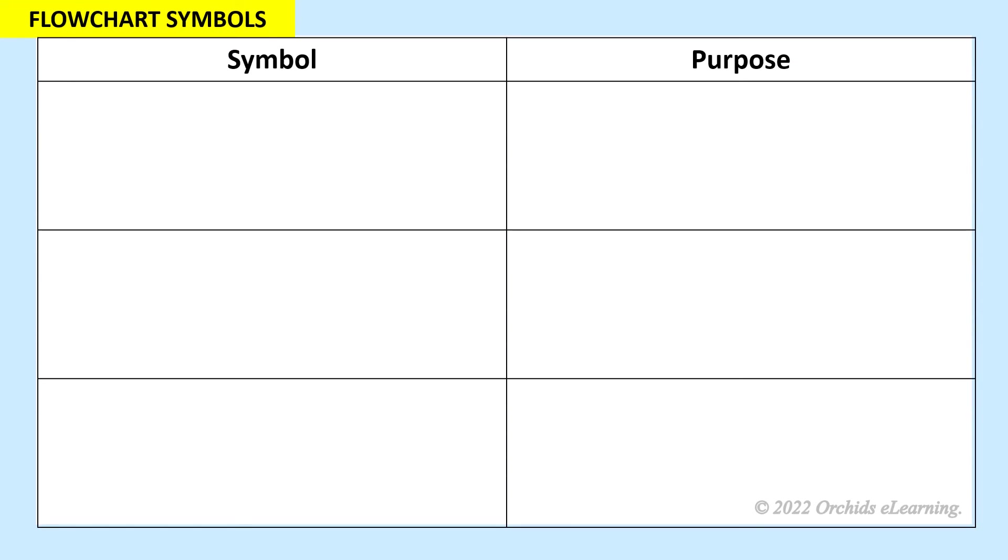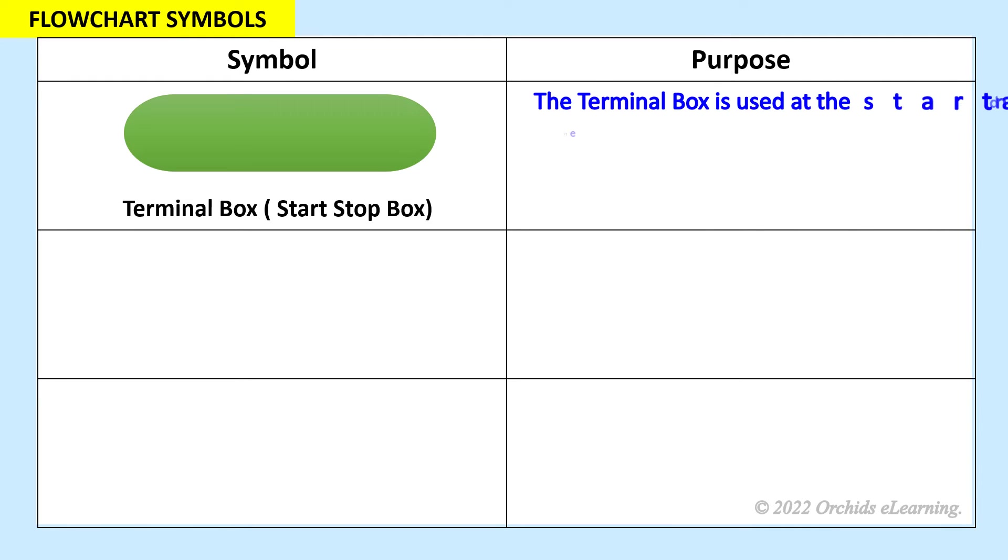Let us see the different flow chart symbols. The terminal box is used at the start and end of the flow chart. It is in the shape of an oval.